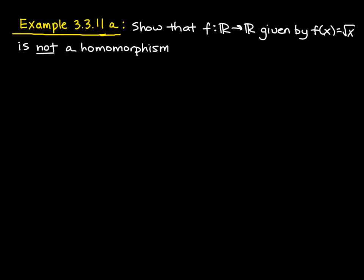So let's consider another example. We're given a map that maps the real numbers to the real numbers with the following definition. Given any x that's a real number, we map x to the square root of x. And we want to show this is not a homomorphism. So let's start by considering f of A times B. So that's going to be equal to the square root of A times B. Now by properties of radicals, this is equivalent to square root of A times the square root of B, and that's precisely f of A times f of B. So we see that the first criteria of the homomorphism is satisfied.